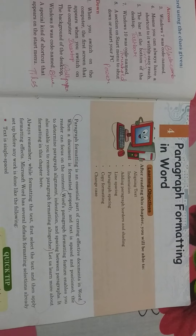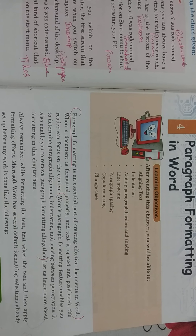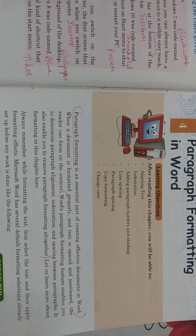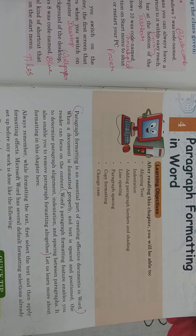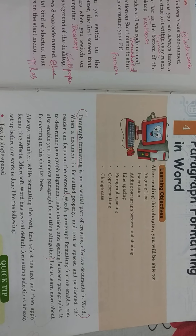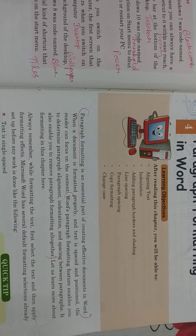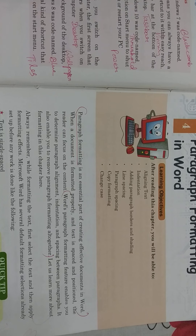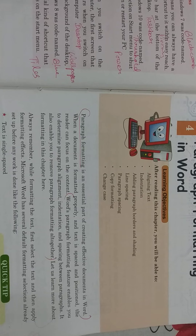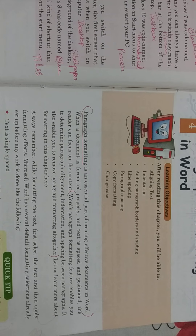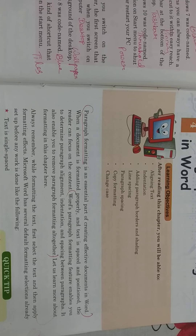Page 35 of your book, Chapter 4. Paragraph formatting is an essential part of creating effective documents in Word. In Microsoft Word we can format a paragraph, make it very attractive and colourful, and apply alignments, indentation, and line spacing so that it looks very attractive. For giving some extra effects or special effects to catch the attention of people, we can do this paragraph formatting. When a document is formatted properly, the text is spaced and positioned nicely. In Word paragraph formatting, we get several features like paragraph alignment, indentation, and spacing.